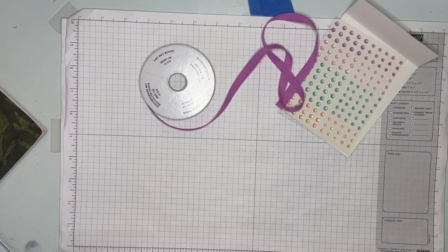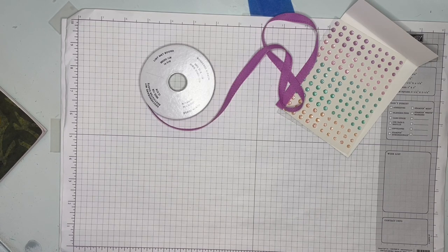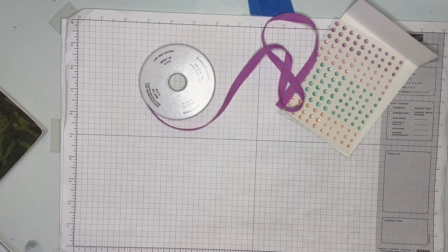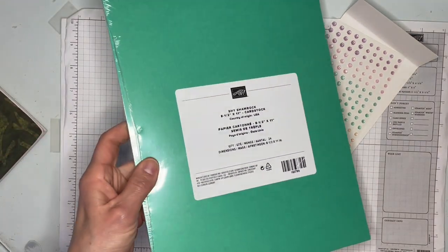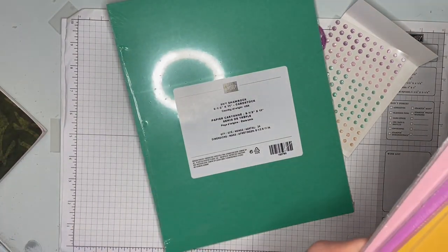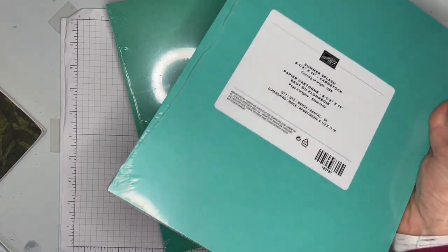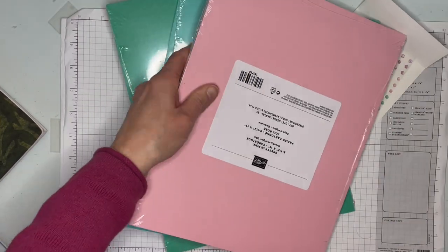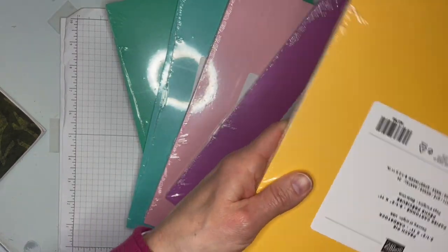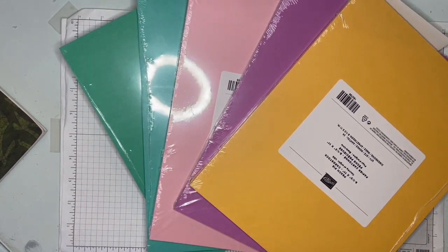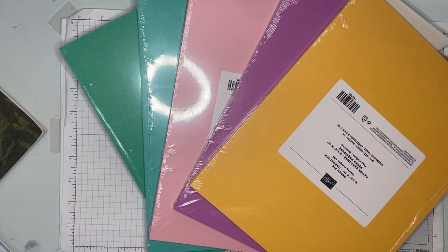So let's keep going with the in color products. Of course, I got full packages of the Shy Shamrock and the Summer Splash, Pretty in Pink, and Petunia Pop, and the Peach Pie. So there we go. We've got those five. All right.